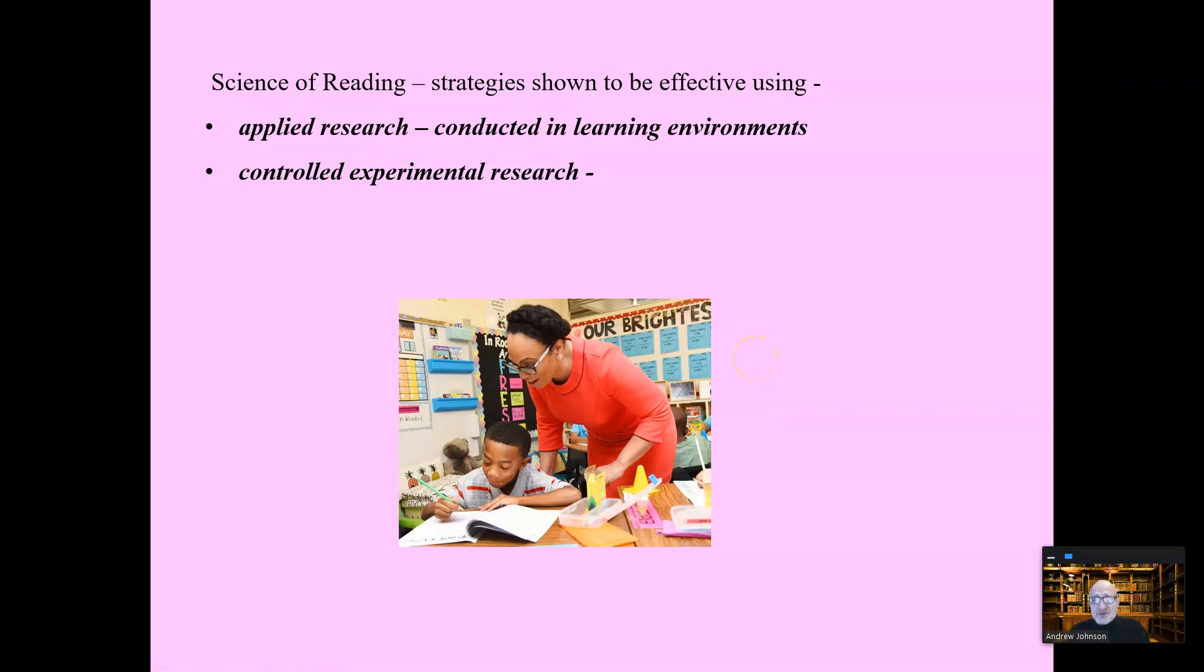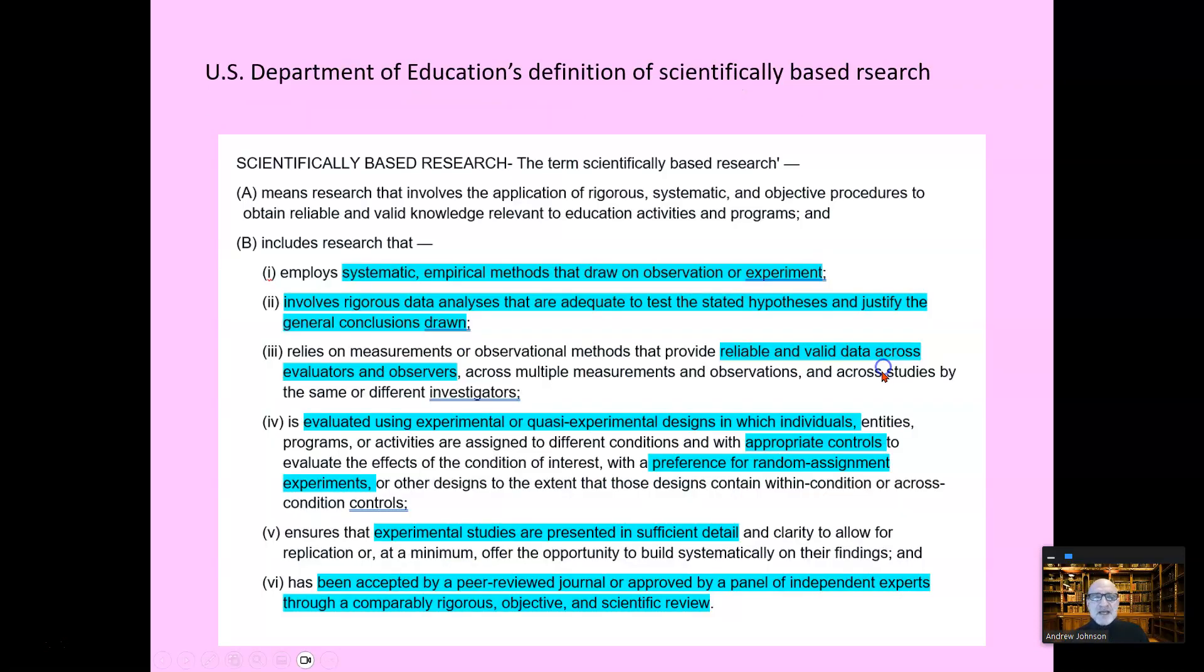Science of reading says you should only use strategies that have been shown to be effective using applied research. That's research conducted in actual classrooms using controlled experimental methods. Now, the U.S. Department of Education, 2002, scientifically based research is this. Systematic empirical, that means it can be observed and measured. Observation or experiment, rigorous data analysis, hypothesis, reliable and valid data. Yes, this is a valid measure of reading. Evaluated using experimental or quasi-experimental design. Experimental design, you have one group. It's appropriate controls, preference for random assignment experiments.